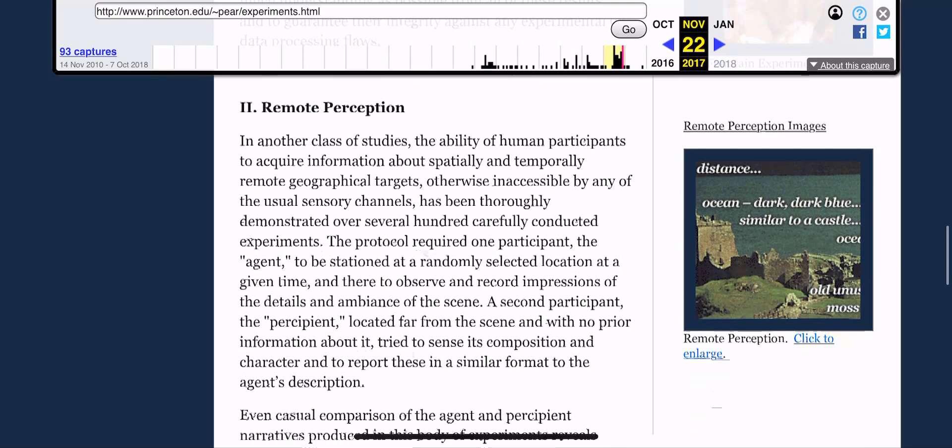While this is all interesting, the next place I wanted to stop was remote perception, which says: In another class of studies, the ability of human participants to acquire information about spatially and temporally remote geographical targets, otherwise inaccessible by any of the usual sensory channels, has been thoroughly demonstrated over several hundred carefully conducted experiments.